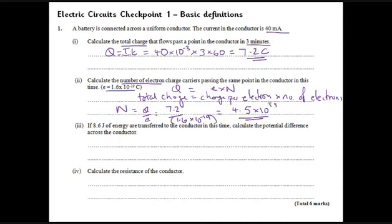Next we've got 8.6 joules of energy transferred to the conductor. Calculate the potential difference. This is why it's called basic definitions - we need to understand that the voltage is the energy per unit charge. We've got 8.6 joules, so this is just 8.6 joules divided by the charge, which we worked out back up here was 7.2 coulombs. 8.6 divided by 7.2 comes to 1.19. We're looking for potential difference, that's voltage, so we put our answer to two significant figures: 1.2 volts.